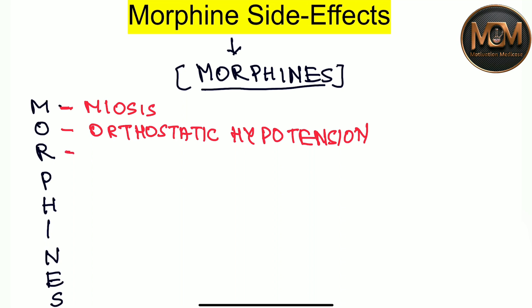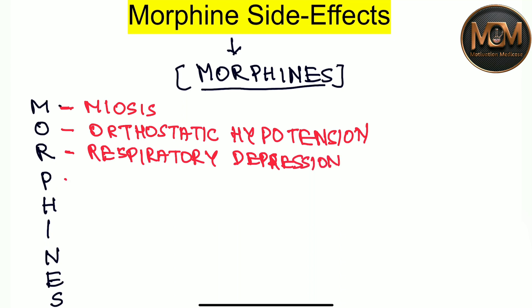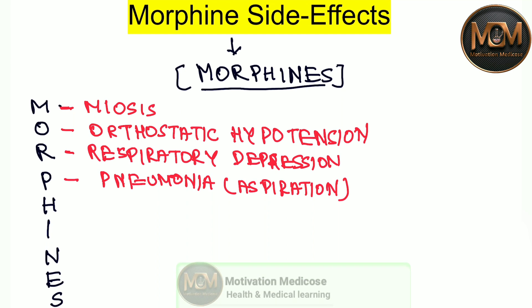From the R we have respiratory depression. From the P we have aspiration pneumonia.